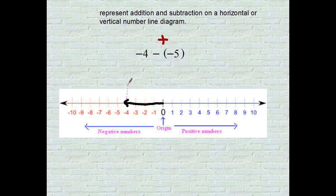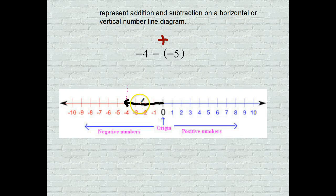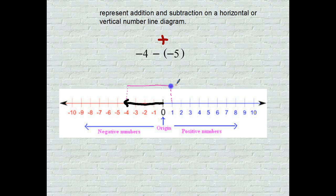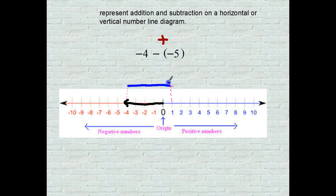Then adding 5 - instead of subtracting 5 and going left, we're subtracting a negative 5, so we're going to the right 5: 1, 2, 3, 4, 5. And where do we end up? We end up right here at positive 1.